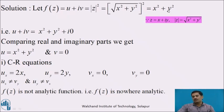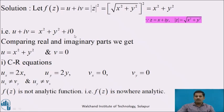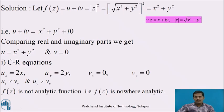We can see that f(z) = x² + y² is a real-valued function. Every real-valued function can be written as a complex-valued function by writing it as (x² + y²) + i·0. Comparing real and imaginary parts, we get u = x² + y² and v = 0.